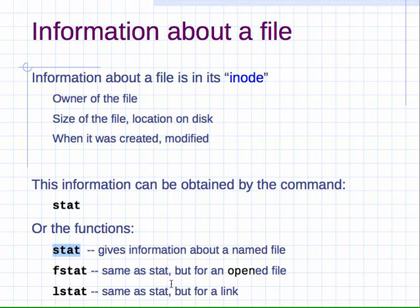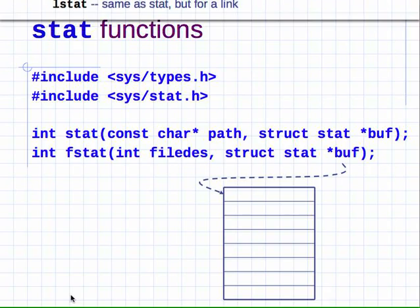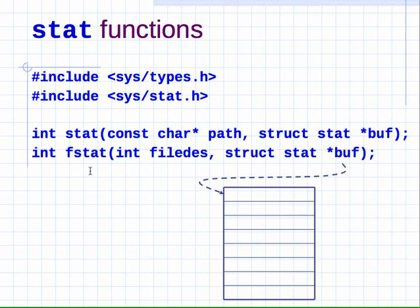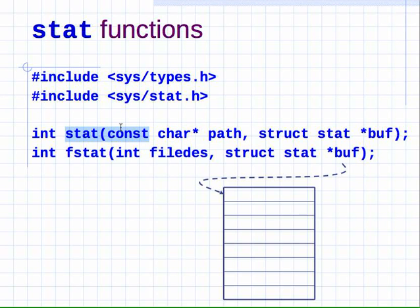We will use `lstat` as the most general way of getting file information. Both `lstat` and `stat` work the same way: you give it a path, which is just a string — a null-terminated string treated as a constant.